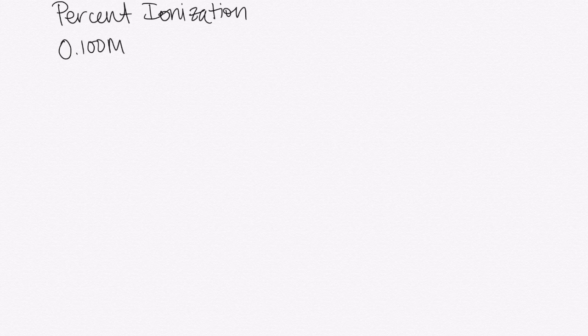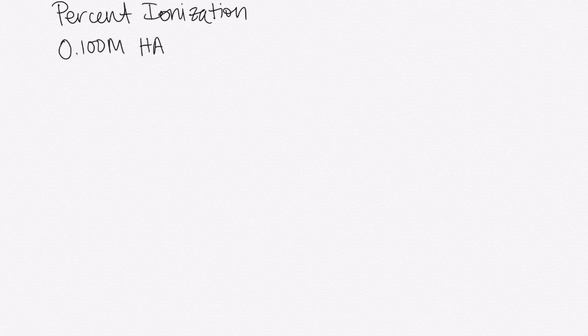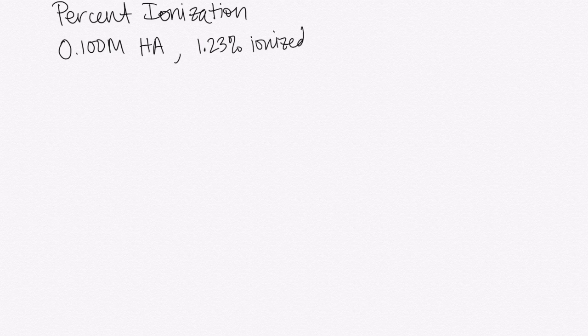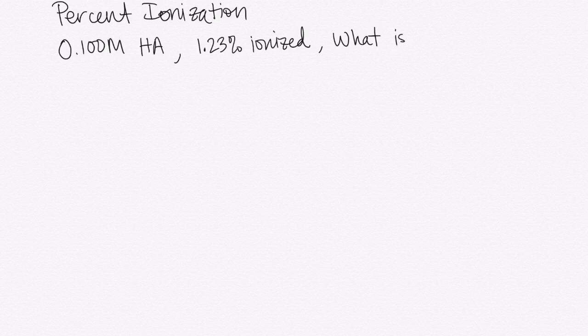An example practice problem is that we're given an initial concentration of the weak acid, and we're also given the percent ionization, and then we want to find the Ka. So for example, we could have a 0.1 molar solution of a weak acid, HA, and they could tell us that it's 1.23 percent ionized, and then ask us what is the Ka for this acid.